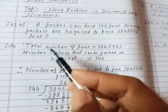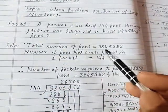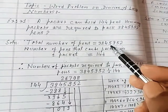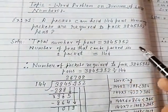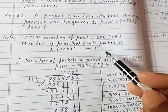Solution. Total number of pens is equal to 3845952. Number of pens that can be packed in one packet is equal to 144.